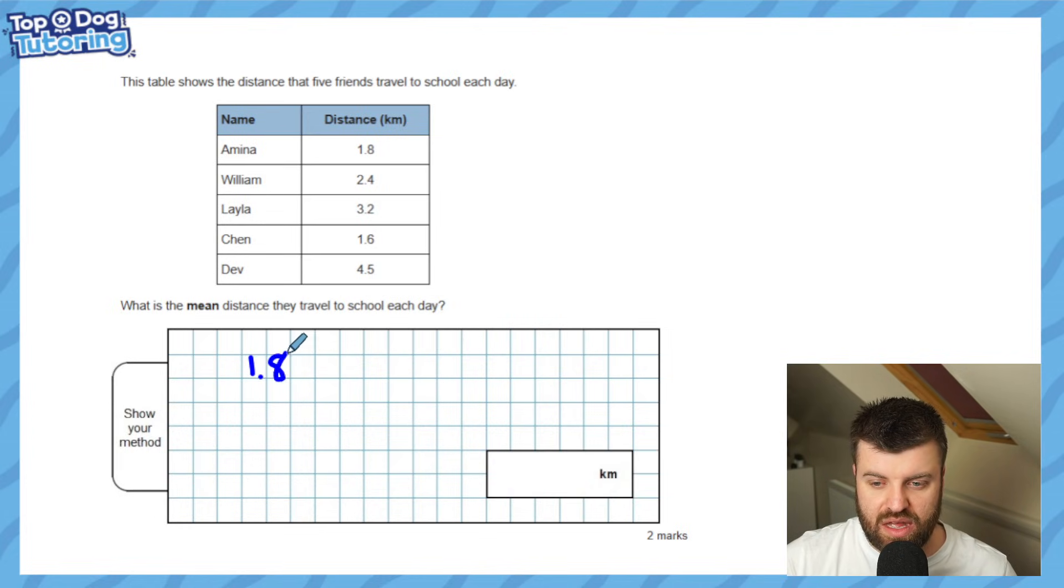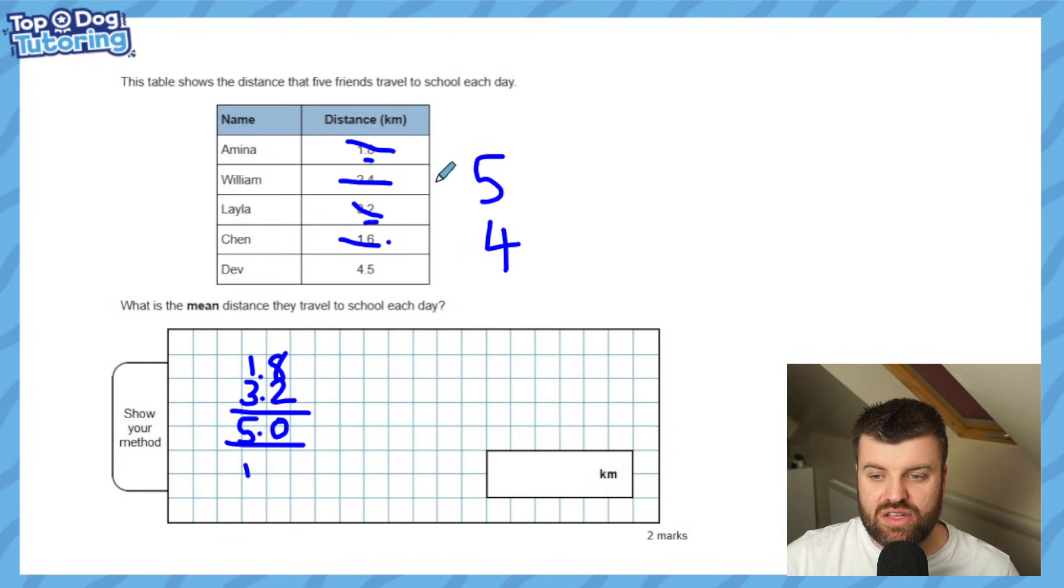If we understand the formula and we've memorized it, this is much easier. Let's add them up. We have 1.8 plus - I'm looking for number bonds to 10. I've got 3.2 here, so the two and eight make one whole kilometer. That's five altogether. Can I see any other number bonds? Yes, 2.4 and 1.6 - the four and six make one kilometer. So in total, they're four kilometers. I've got five plus four, which is nine. All I've got left is Dev who got 4.5. Nine plus 4.5 - the 0.5 drops down, nine plus 4 is 13. I have my answer, right?